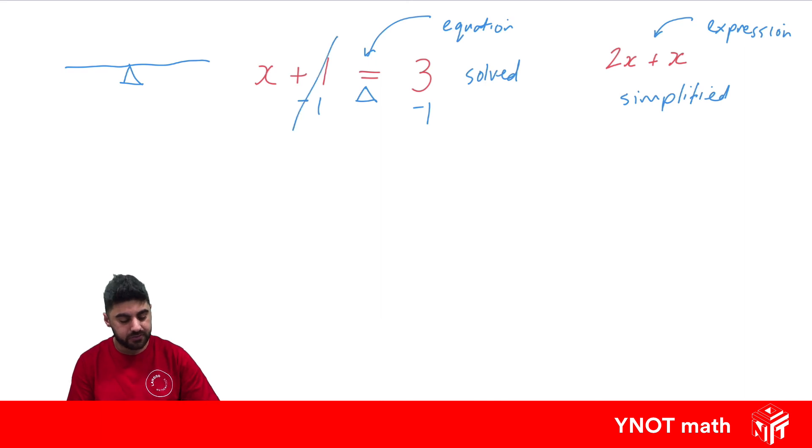And what happens here, 1 minus 1 gives us 0 and we're just left with the x. Always write the equal sign under the equal sign, and 3 minus 1 is 2. And that should make sense because if x equals 2, 2 plus 1 equals 3.